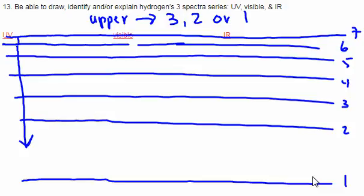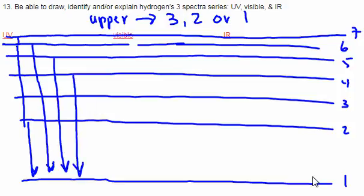So UV could drop from seven to one. I should extend this all the way down because I can't do it partially. So the UV would be from seven to one, six to one, five to one, four to one, three to one, and two to one. That's the UV series right there.